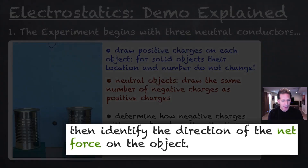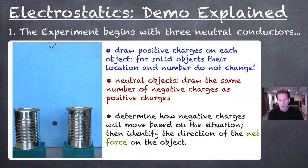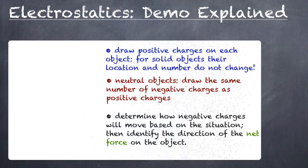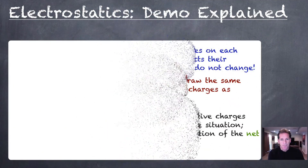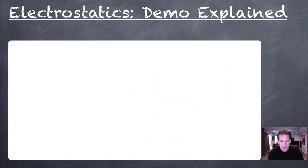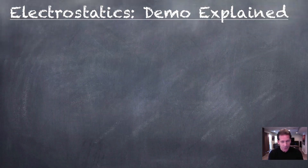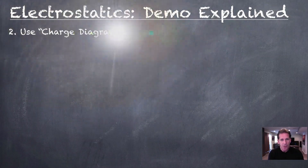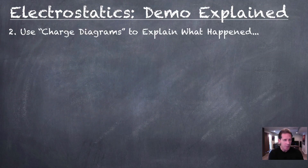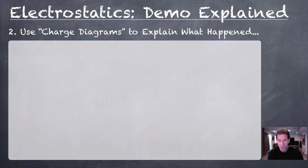Next, determine how the negative charges will move based on the situation. If they are conductors, they'll evenly spread out throughout the conductor. If they are neutral objects, they may have a bit of an induced charge on them — that's what you'll decide in each situation. Once you've done that, identify the direction of the net force on the object and see if you can predict the direction it will move. Let's try to apply this process step-by-step in breaking down this relatively complicated demonstration. See if we can make sense of what's going on — I'm just going to call them charge diagrams.